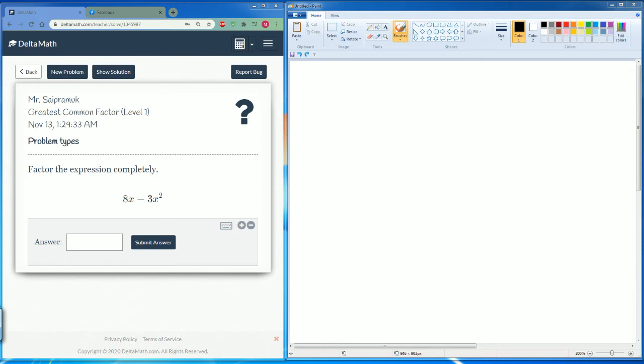Welcome, this is the Delta Math tutorial covering greatest common factor. Here it says to factor this expression out completely. We have the expression 8x minus 3x squared. So to do this we have to first find the greatest common factor, and to do that we have to expand it out.